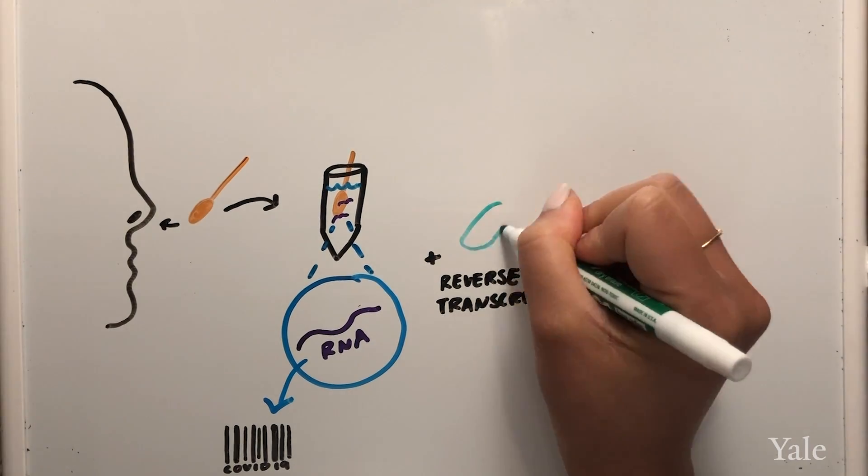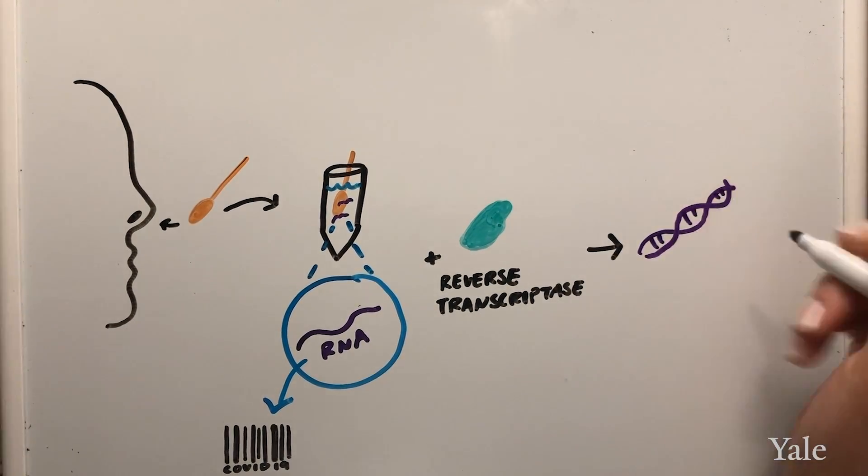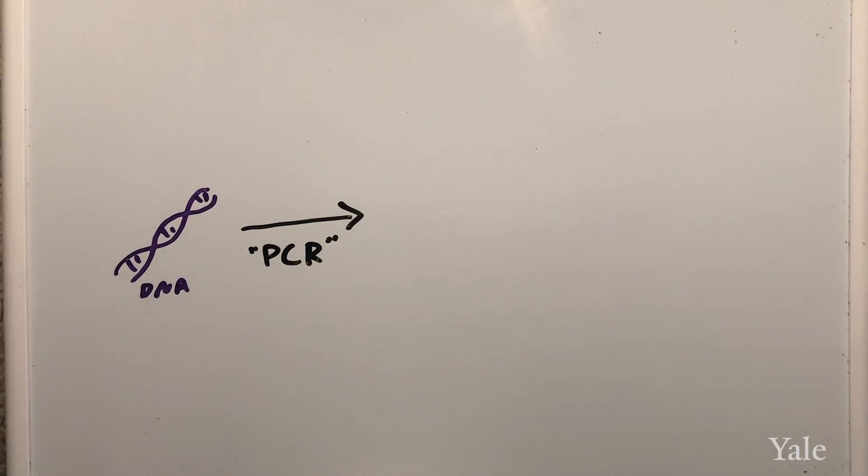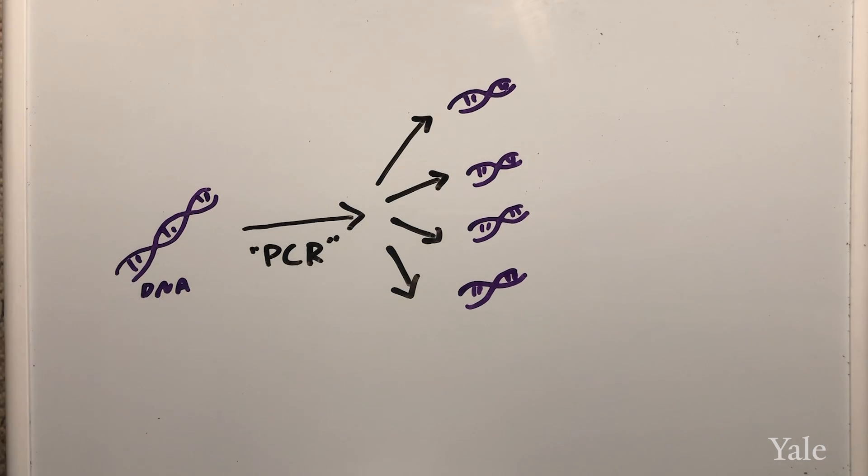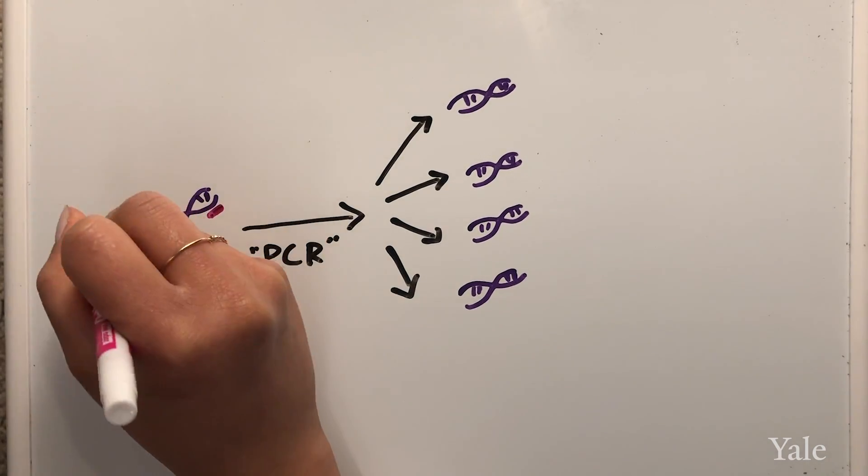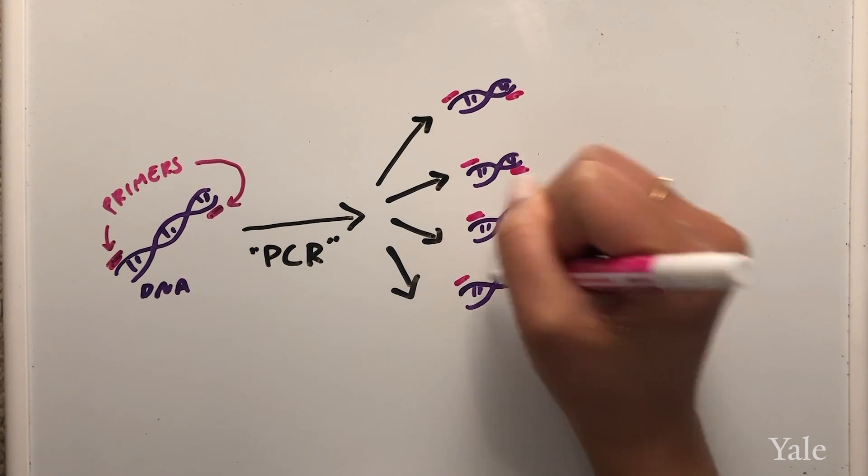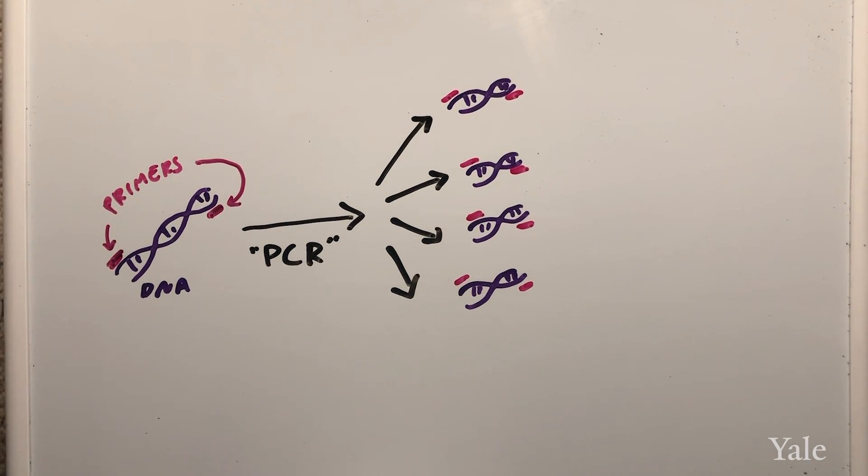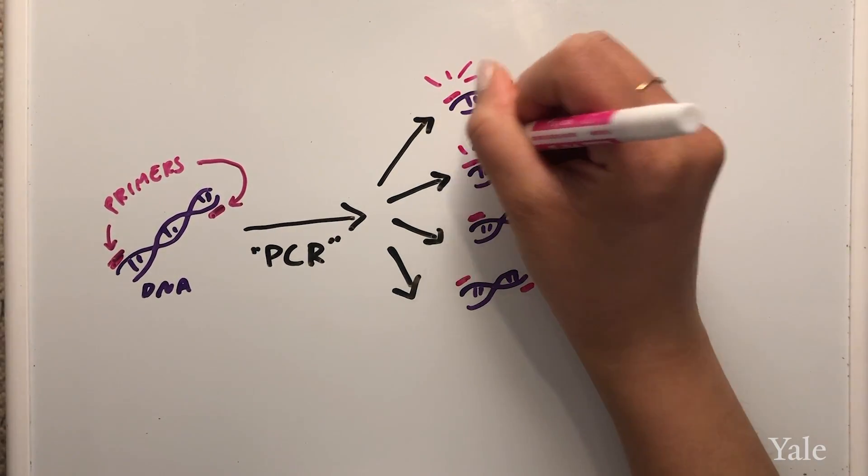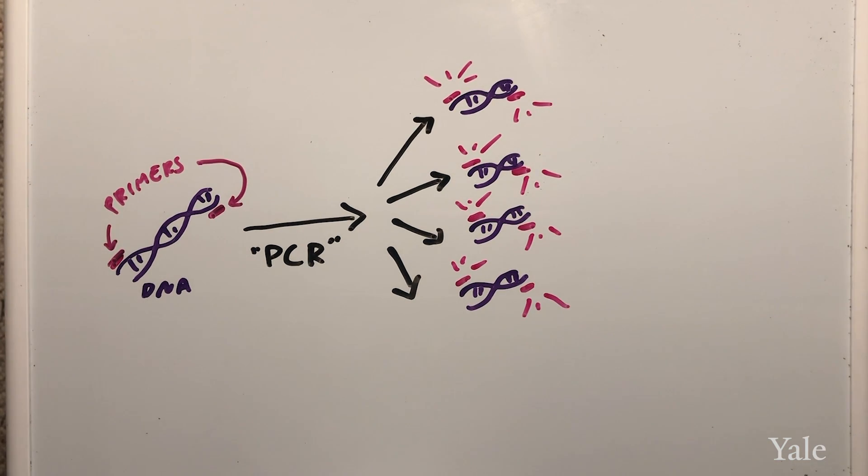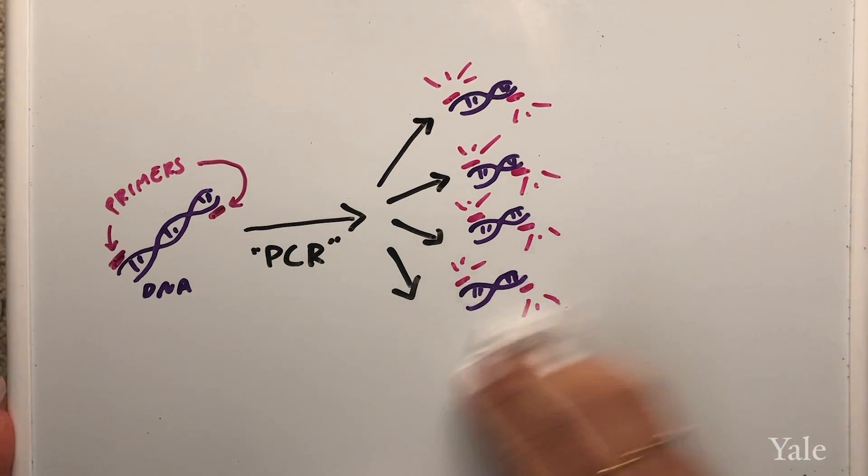Once the RNA is extracted scientists add an enzyme called reverse transcriptase to turn the RNA into DNA. Next they use a polymerase chain reaction or PCR to make more copies of the DNA. To do this scientists add primers which are short sequences that can be designed to attach only to fragments that make the sample DNA uniquely COVID-19. Fluorescent dyes are added in the mix and fluorescence will correspond to how much of that identifying fragment is present in the sample. Thus the amount of fluorescence tells us the amount of virus in that sample. If there's no virus you'll get virtually no fluorescence.